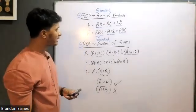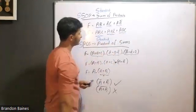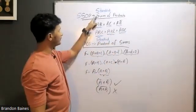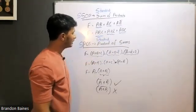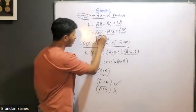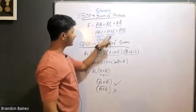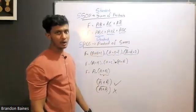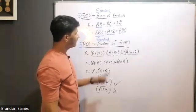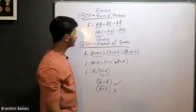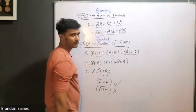Standard form is called minterm. What is it called? Sum of Products is called a product term. The term is called standard. Standard form is called standard, and A, B, C is the same.